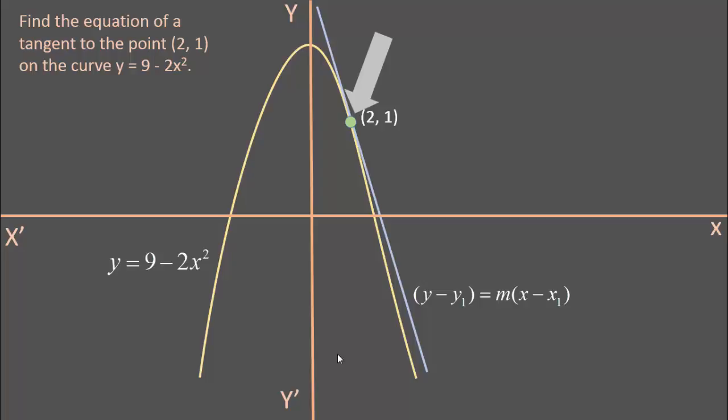At the point of tangency, the slope of the curve y = 9 - 2x² is equal to the slope of the tangent. Now how to find the slope of the curve? The first derivative of the function y = 9 - 2x² is the slope of the function at any given point.